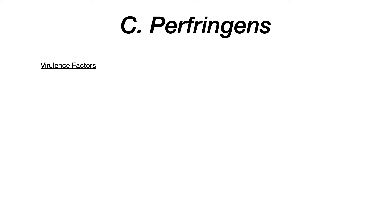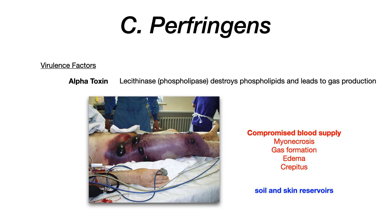For virulence factors, the major high-yield one you need to know is alpha toxin. Alpha toxin is a lecithinase, or a phospholipase, meaning that it destroys phospholipids. We have phospholipids in all of our soft tissue, so when this alpha toxin gets released by the bacteria, that toxin — being a phospholipase — destroys phospholipids. If it's destroying phospholipids in our soft tissue, that leads to the breakdown of that tissue, and hence myonecrosis.